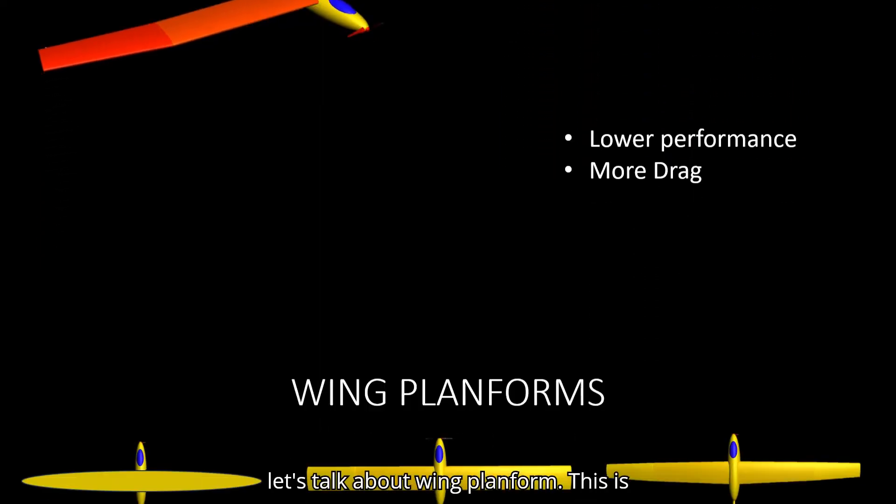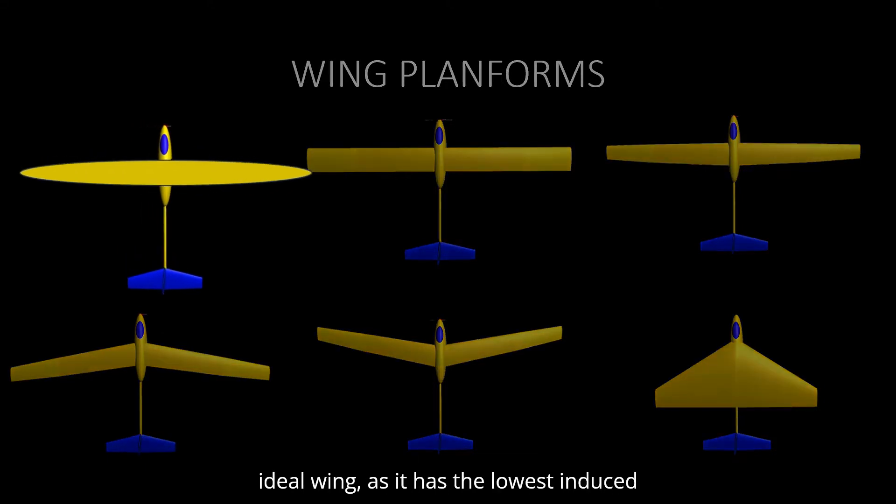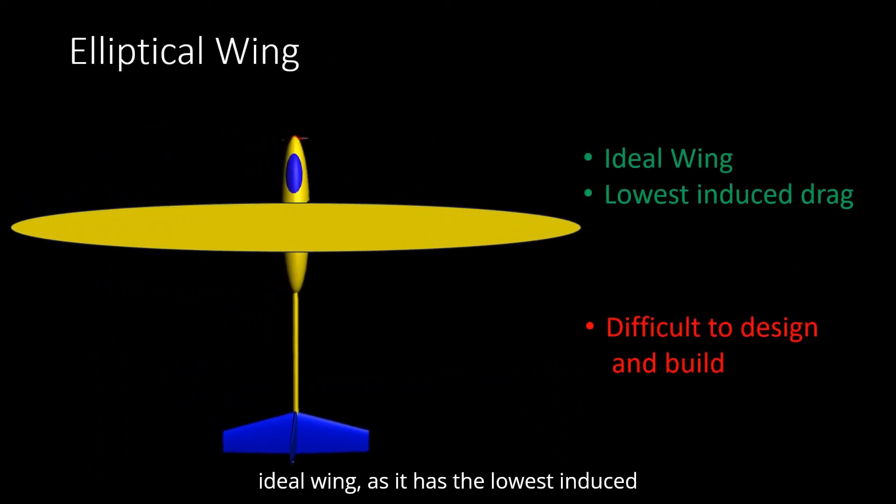Now, let's talk about wing planform. This is the shape of the wing as seen from the top. The elliptical wing planform is the ideal wing, as it has the lowest induced drag. This wing stalls evenly across the span, but it is difficult to make.